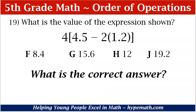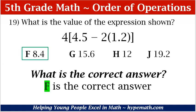So 4 times, in brackets, 4.5 minus 2 times 1.2 is equal to 8.4. What is our correct answer? Looking at F, G, H, and J — if you said F, you are absolutely correct. F, 8.4 is the correct answer.